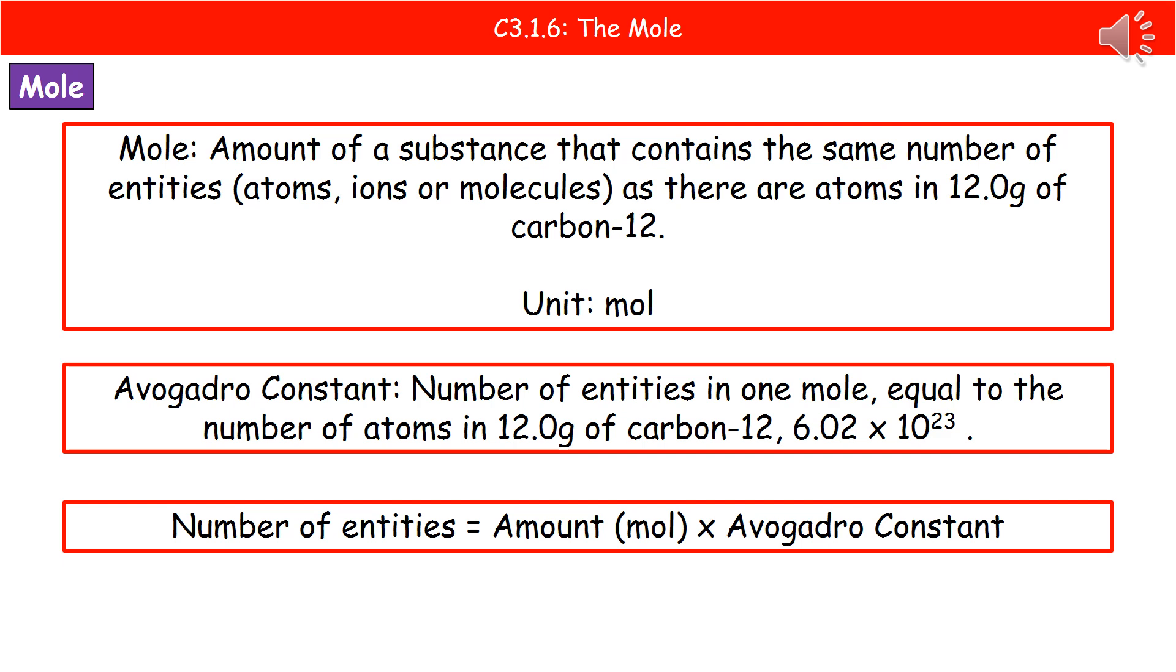So we've got that reference point of our carbon-12, and basically however many atoms there are in 12 grams of carbon-12, then one mole of another substance has exactly the same number of those entities. It has the units mol, and then when we're writing it that's the unit we will include after the numbers.